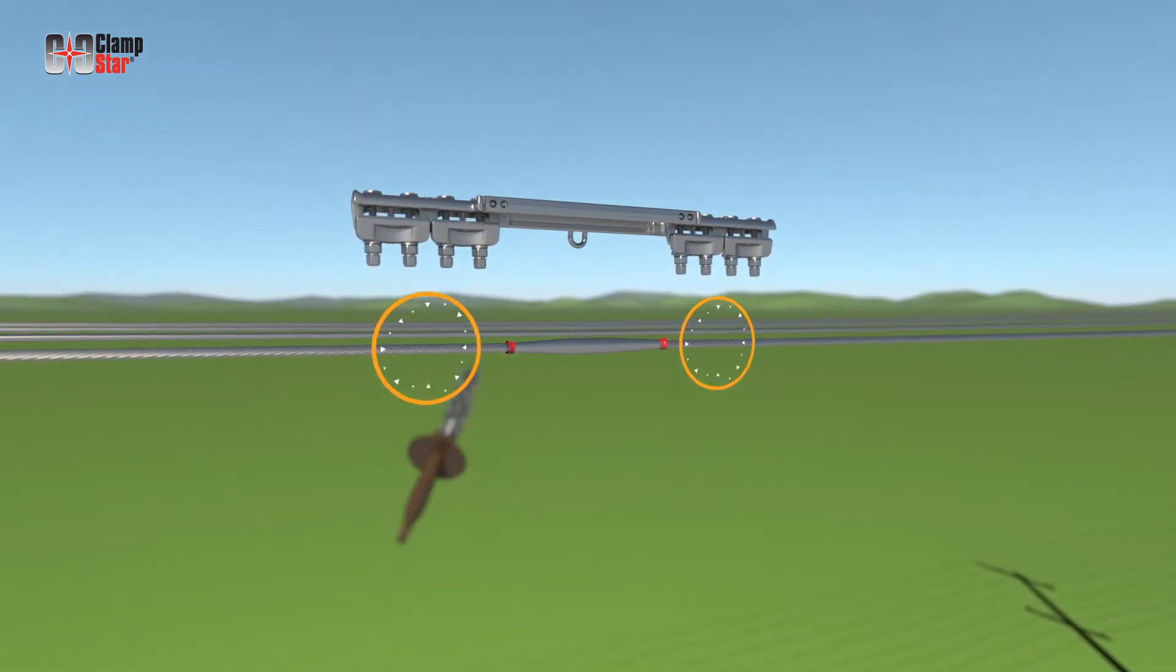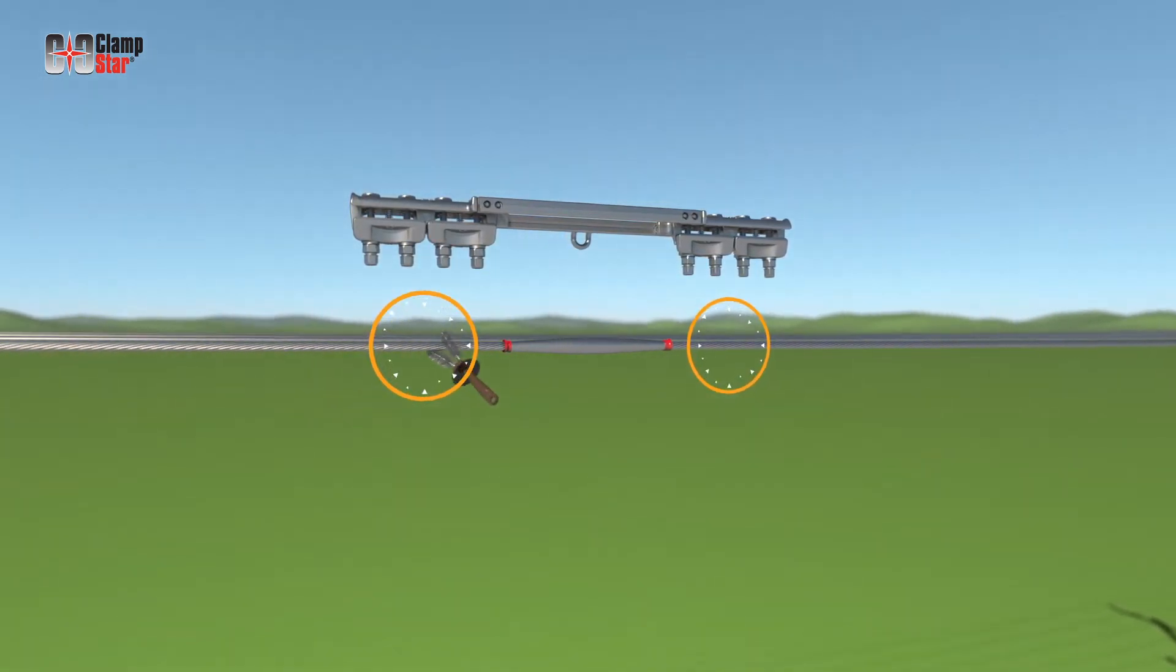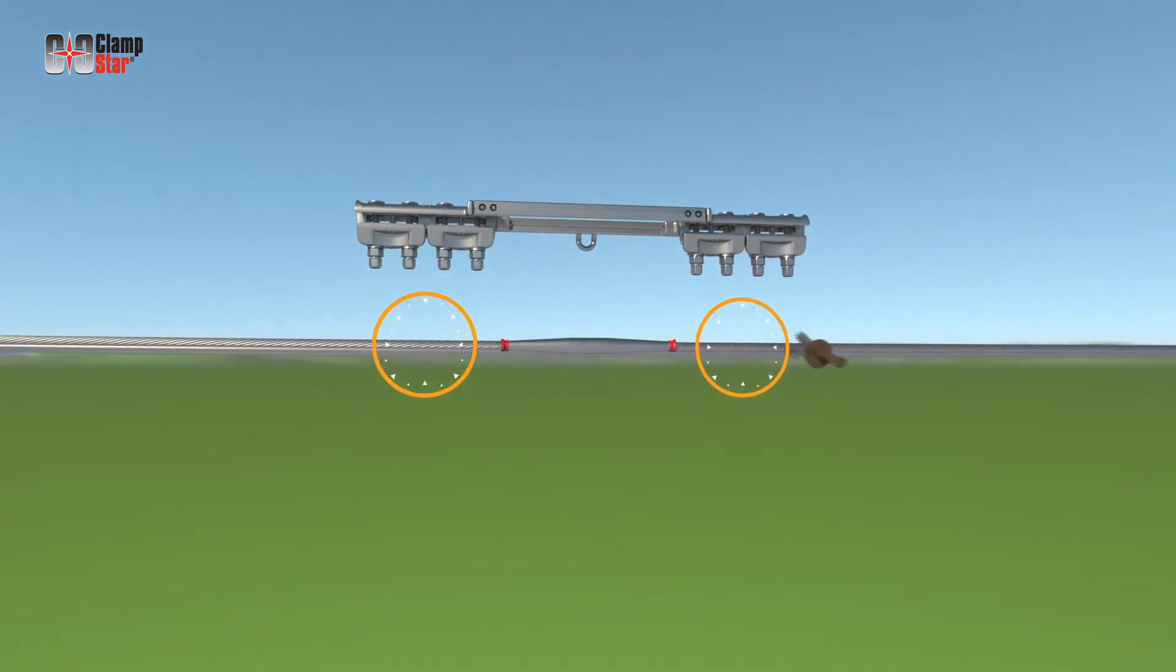Prior to installing the ClampStar, the conductor must be properly prepared by brushing the area that will be in contact with the ClampStar unit.